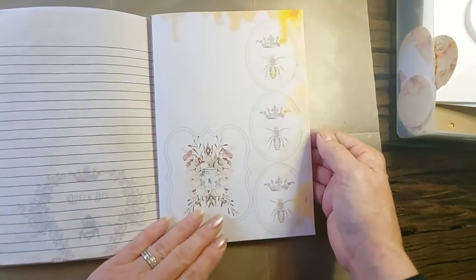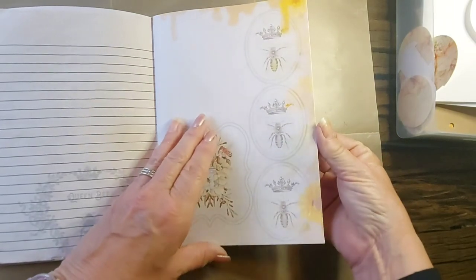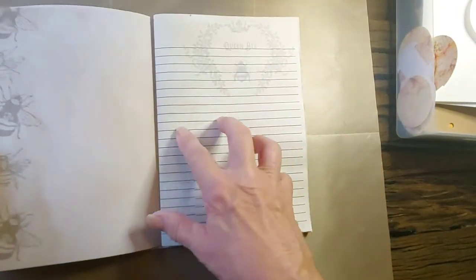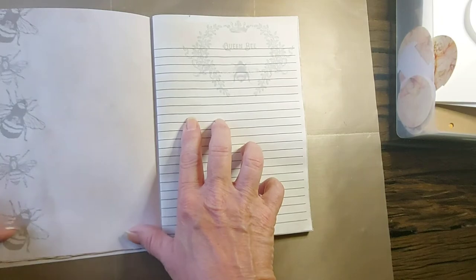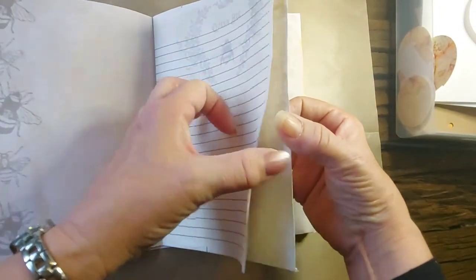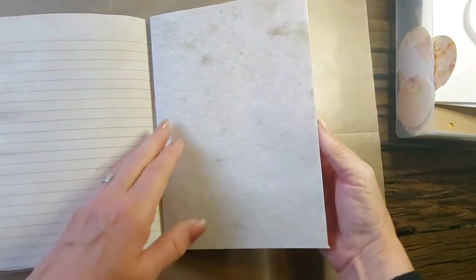The queen bee. The sunflowers. Again, bees down the side. Another page for writing in. Page for writing in.